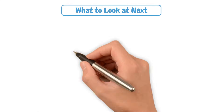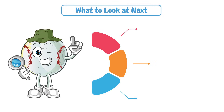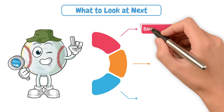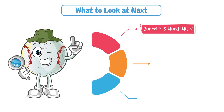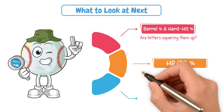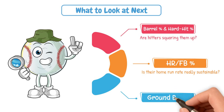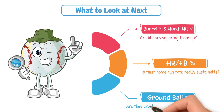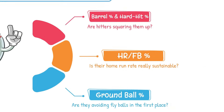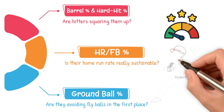Here are some advanced stats to layer in once you've already looked at FIP and XFIP. First, barrel percentage and hard hit percentage — are hitters squaring them up? Home run to fly ball percentage — is their home run rate really sustainable? And ground ball percentage — are they avoiding fly balls in the first place? These will help you dive deeper into the actual performance of each individual pitcher.